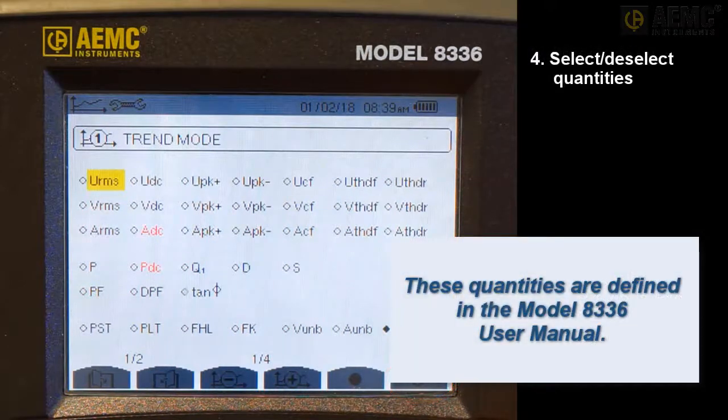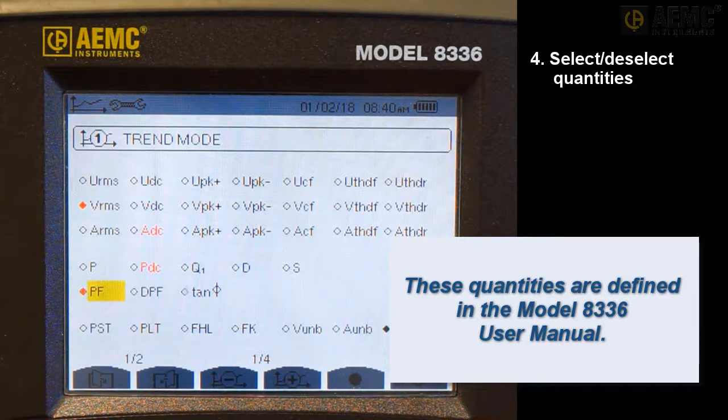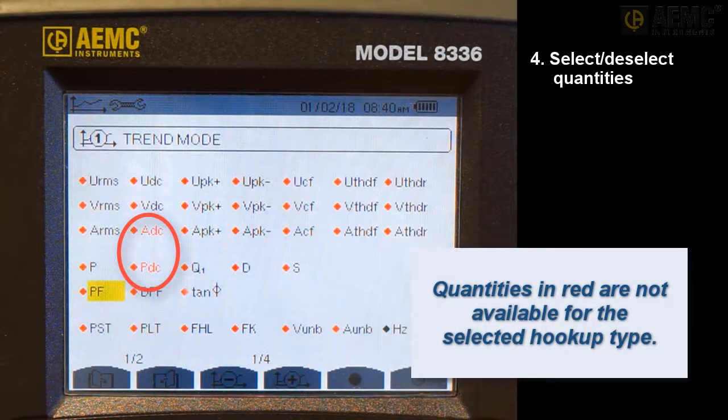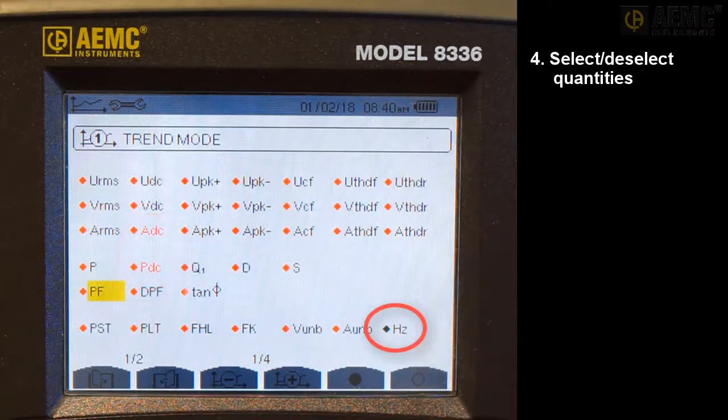Use the arrows to navigate through the displayed quantities. Select or deselect a quantity to record by pressing Enter. In our example, we will include all quantities. Note that some quantities may appear in red. This indicates the parameter is unavailable for the selected configuration due to incompatibility with the hookup type, disconnected sensors and probes, or other factors. For example, if no current sensor is connected, all current quantities appear in red. Also note that Hertz is always selected.